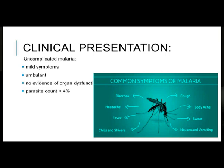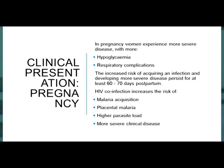Uncomplicated malaria patients are usually ambulant with no evidence of organ dysfunction and a parasite count of less than 4%. Specifically in pregnancy, pregnant women experience more severe disease, especially hypoglycemia and respiratory complications. There is also an increased risk of developing severe disease or acquiring new infections 60 to 70 days postpartum. HIV co-infection further increases risk of malaria acquisition, placental malaria, higher parasite load, and more severe clinical disease.